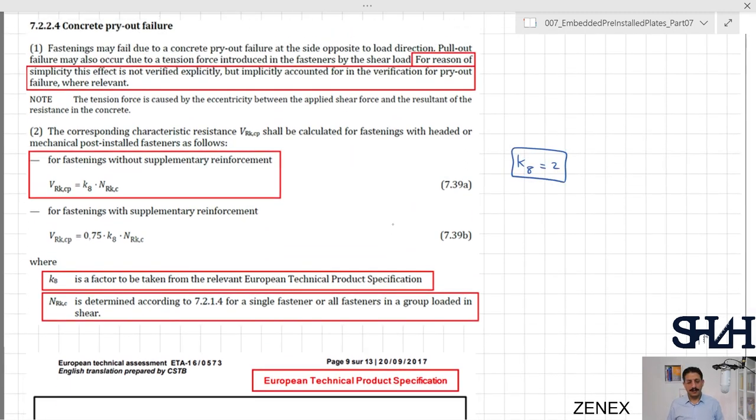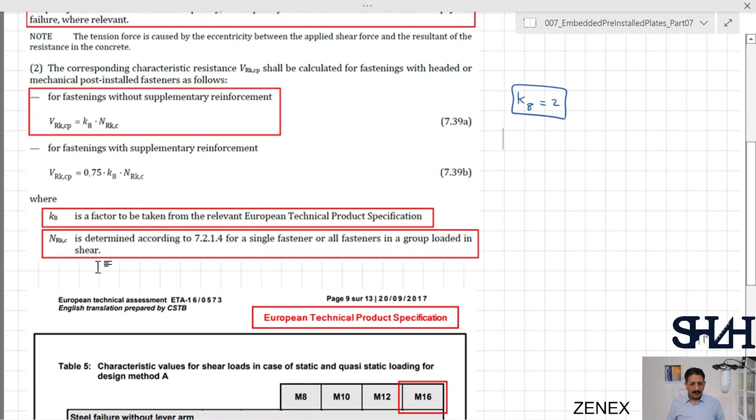We already have k_8 which is 2, and then we need to determine N_Rk,c. N_Rk,c is determined according to 7.2.1.4 for a single fastener or all fasteners in a group loaded in shear.